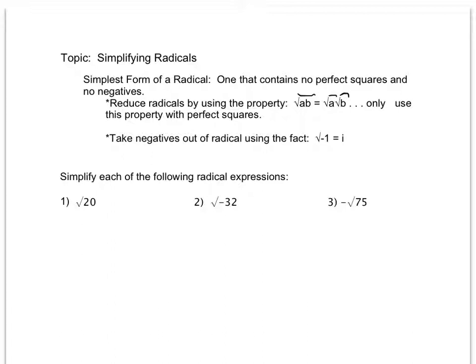Notice that I can only do this with multiplication. I do not have a property that says the square root of a plus b breaks into the square root of a plus the square root of b, so please be careful of that, because that's a mistake I see follow students all the way through their upper-level math courses. I can only do this with multiplication. And of course, I always have to take negatives out of the radical using the fact that the square root of negative 1 is i, which we looked at in the last video.